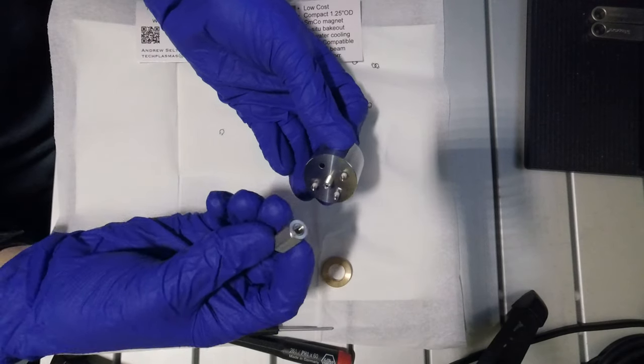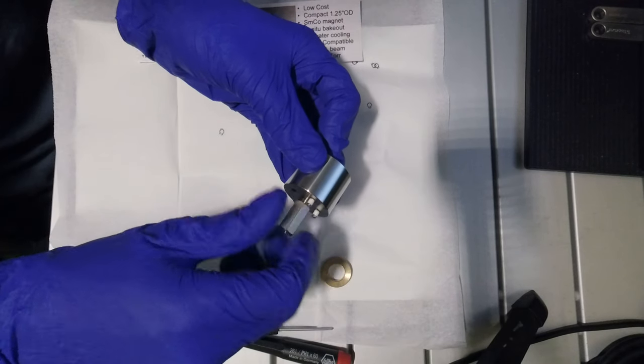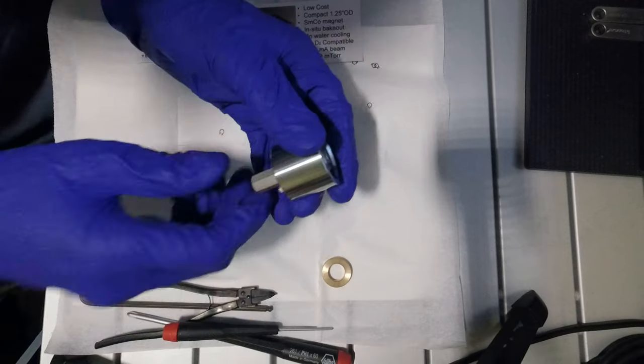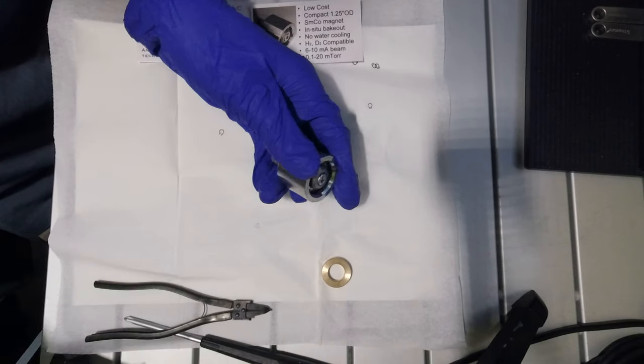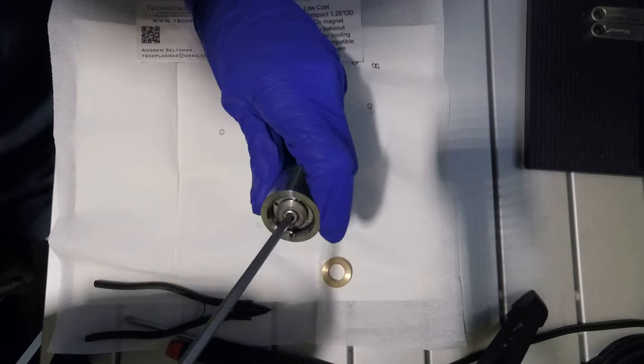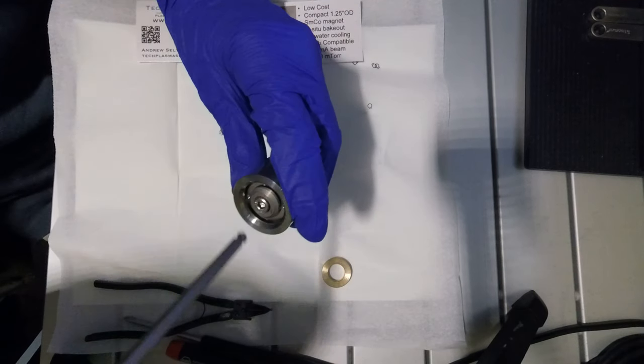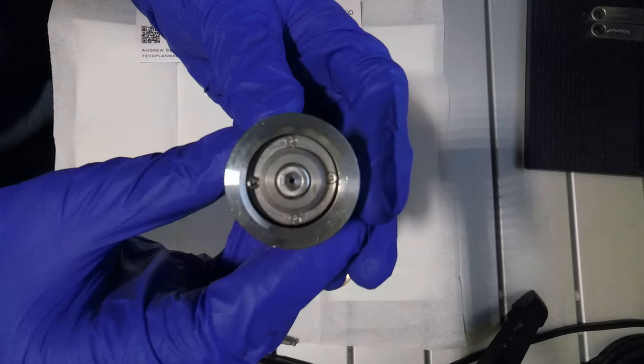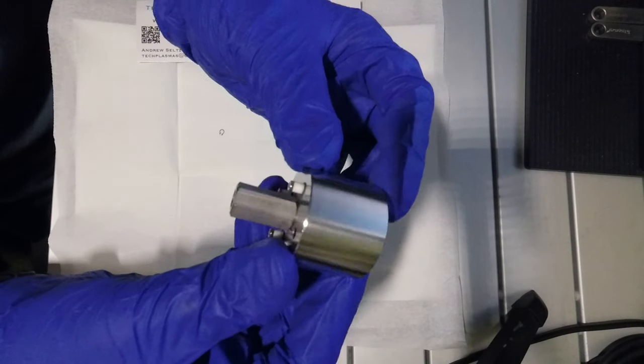Now thread the 1032 standoff onto the back of the ion source and tighten it to finger tight with an Allen key. The ion source core is now complete.